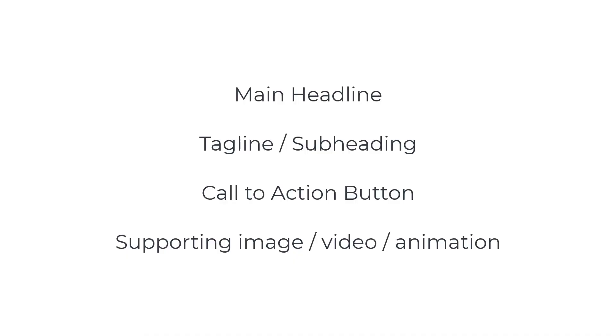Of the eight features, I'm going to list the very first four together because they're typically within the same section on your homepage. These four features would be the main headline, the tagline or sub-headline, the call to action button, and a supporting image, video, or animation. They're grouped together because they're typically in the very first section on your homepage, just underneath the main header that would have your logo and main menu.